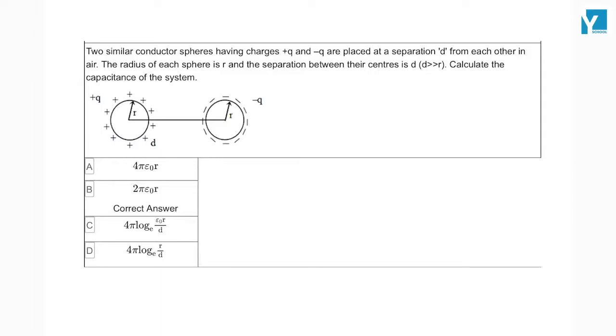Two similar conductor spheres having charges plus Q and minus Q are placed at separation D from each other in air. The radius of each sphere is R. Separation is very very larger than R. Calculate the capacitance of the system.